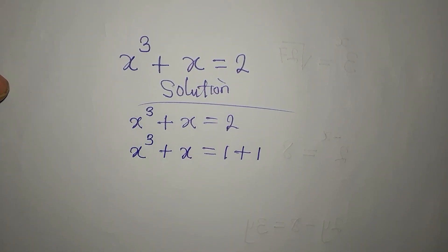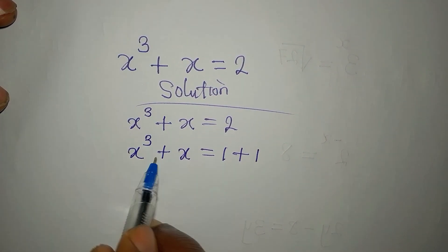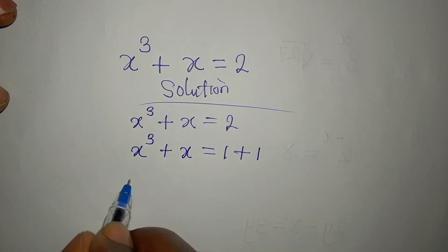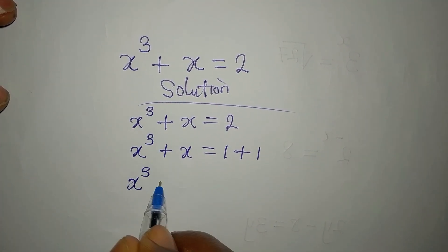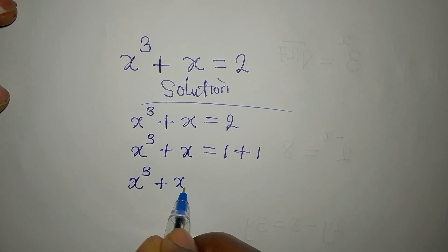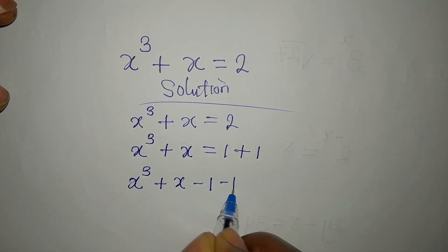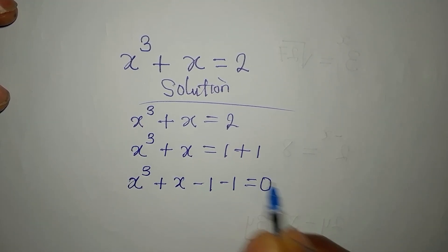The next step is to bring all terms to the left side, giving us x³ + x − 1 − 1 = 0.